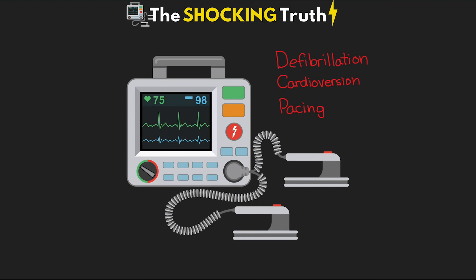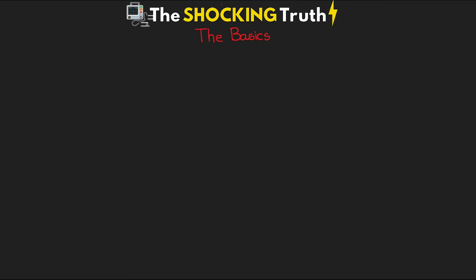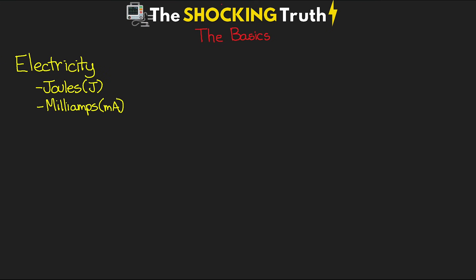Before we talk about each of these modes, I want to cover some basic information about electricity, which is what really makes all the magic happen. You'll come across two different measures of electricity on the defibrillator. The first is joules — essentially a measure of amps times voltage times some period of time — and the other is milliamps, which is just the current. It's important to know you'll see these different measures depending on which mode you're in.